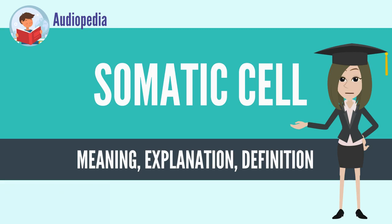Mammalian germ cells give rise to spermatozoa and ova, which fuse during fertilization to produce a cell called a zygote, which divides and differentiates into the cells of an embryo.